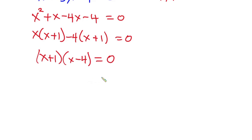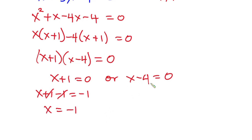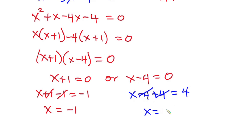So we have x plus 1 equals 0, or x minus 4 equals 0. Making x the subject from the first: x plus 1 minus 1 equals negative 1, so x equals negative 1. From the second: x equals 4.